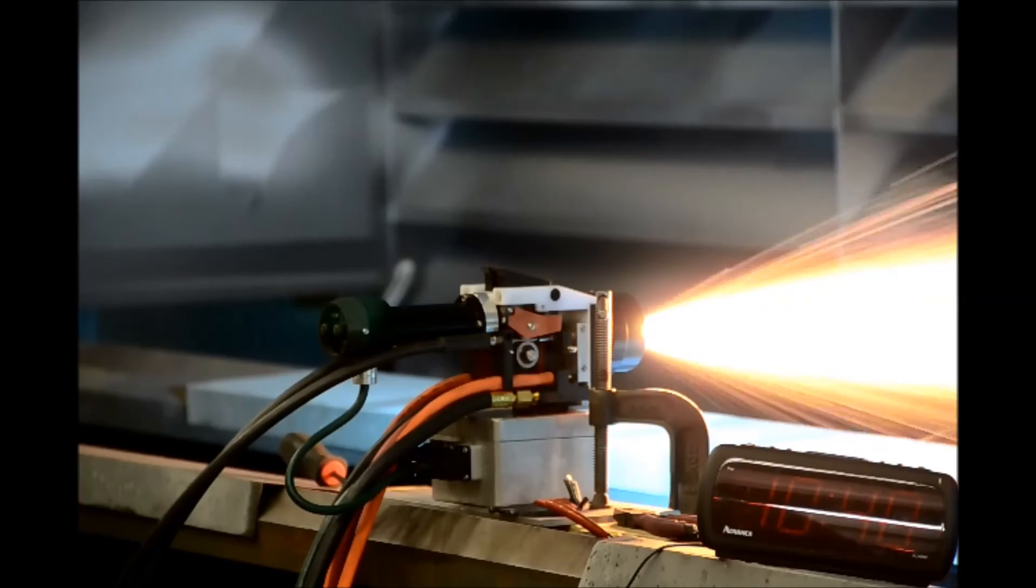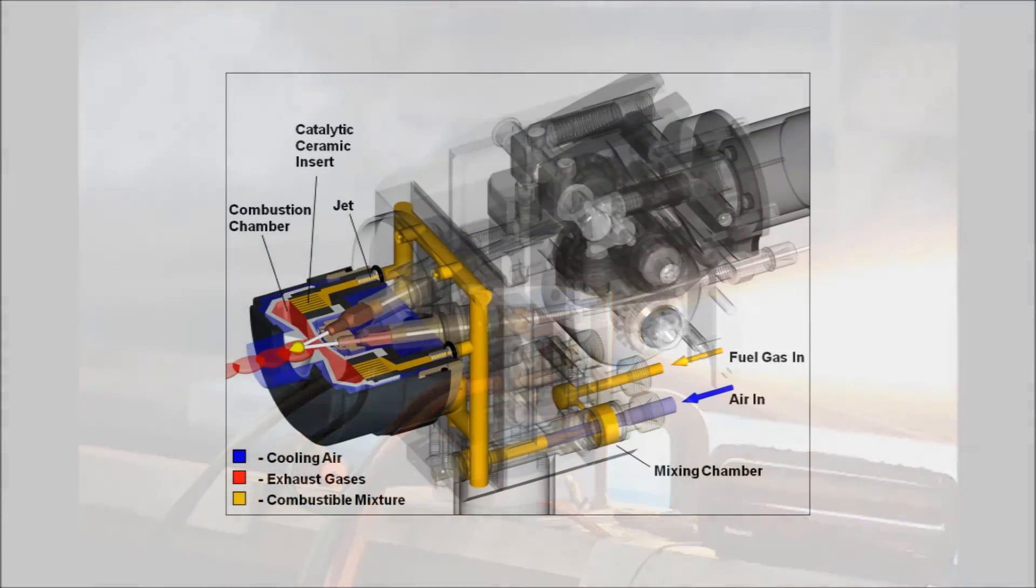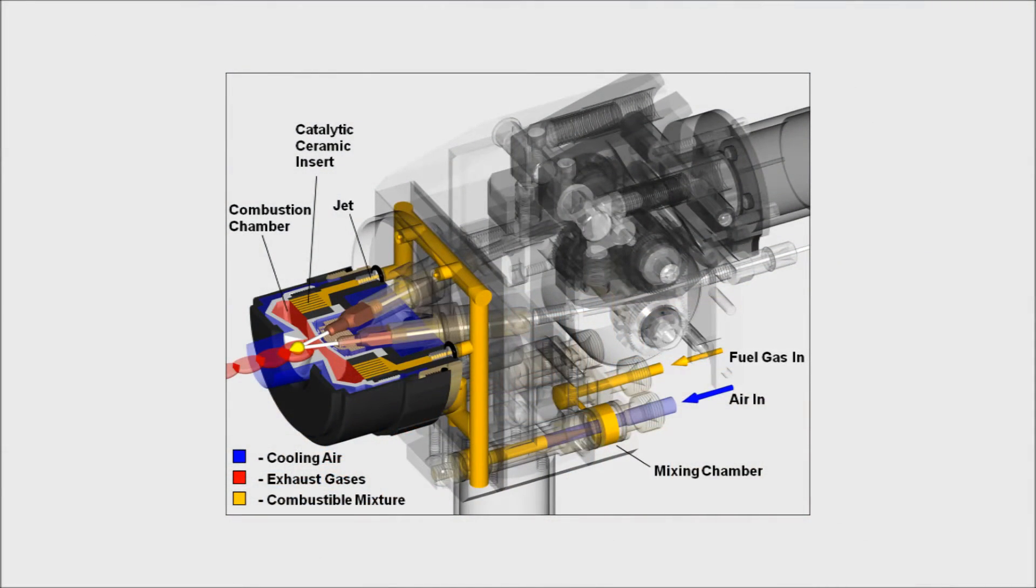The spray head, which is the size of a conventional arc head, includes a toroidal combustion chamber atomizer surrounding the wire tips. A hot ceramic insert activates air fuel combustion and makes it stable within an extremely short chamber, with the exhaust gases directed into the arc zone.